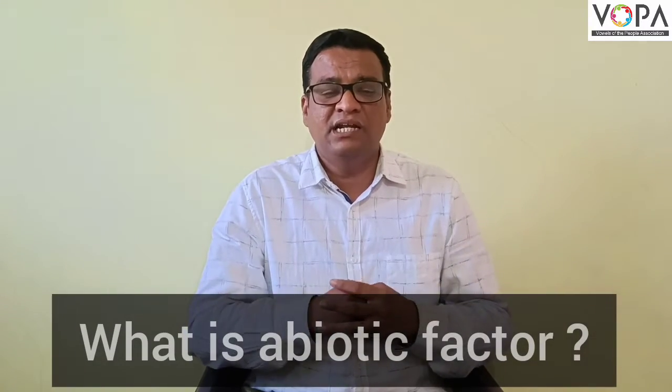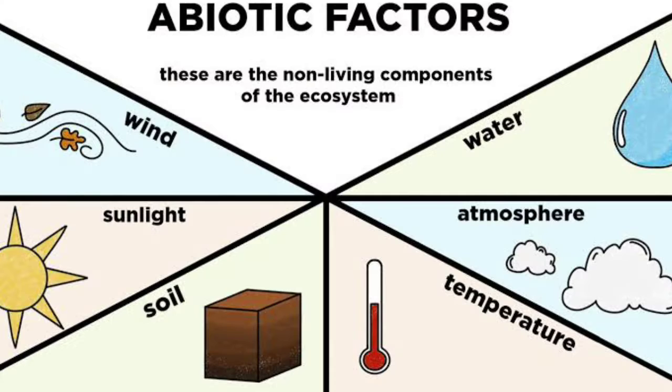Abiotic factors include physical factors and chemical factors. Physical factors include vapor, water, soil, sunlight, and carbon dioxide.